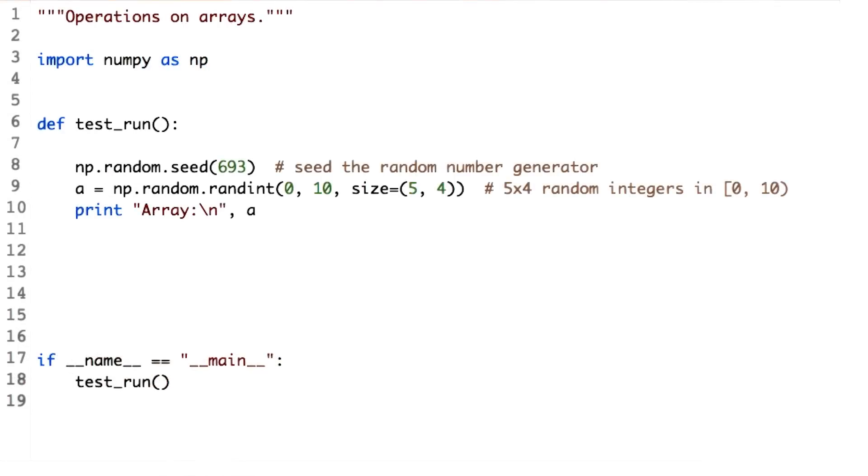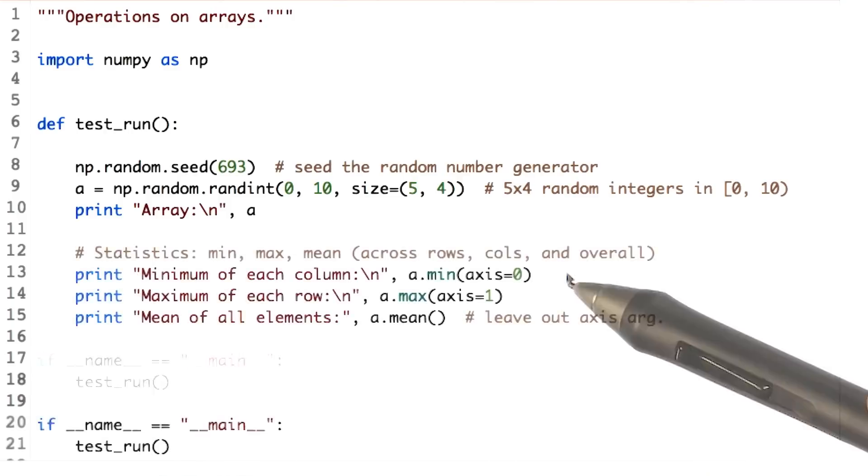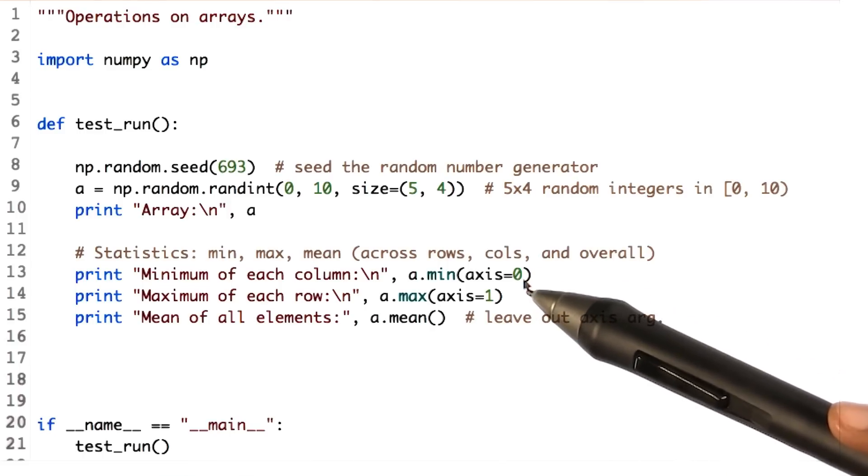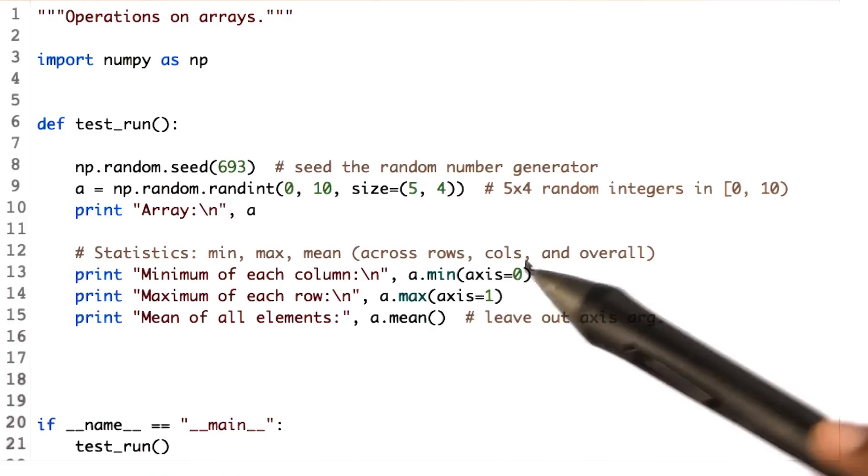Let's go ahead and try some basic operations like finding minimum, maximum, and mean of an array. So if I want minimum along columns, I have to go through each row of each column. So axis equal to zero to get the minimum of each column.